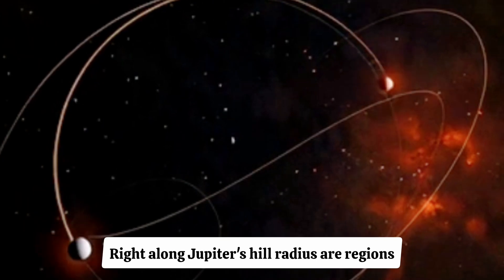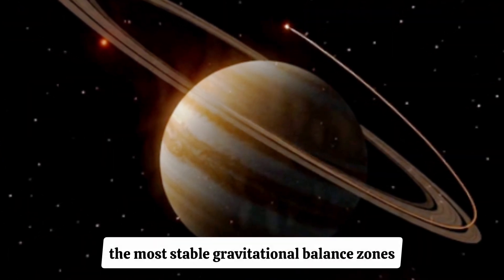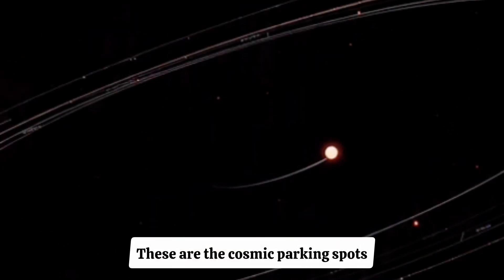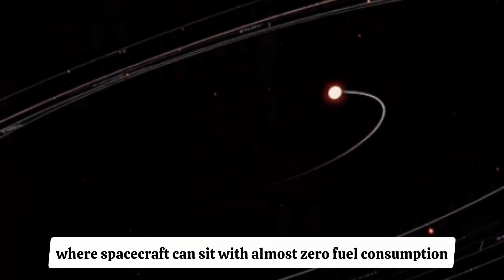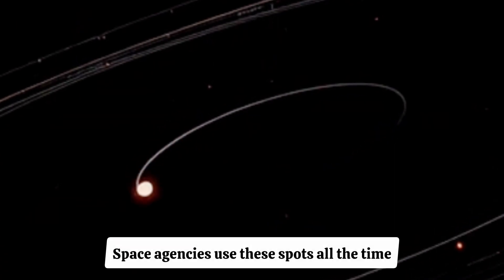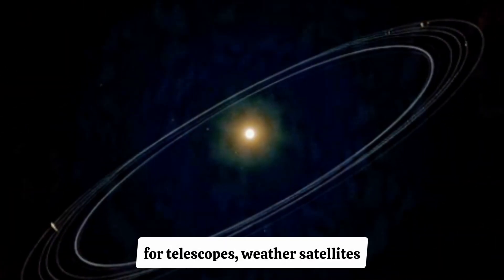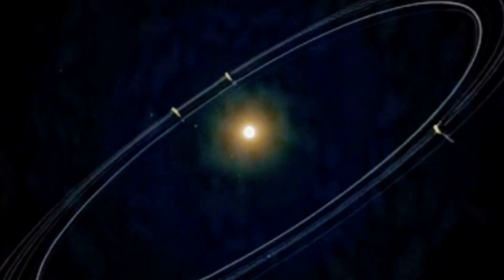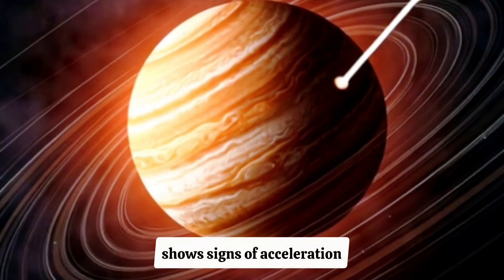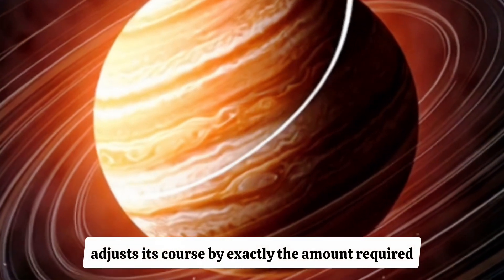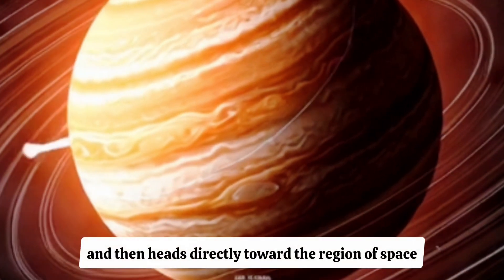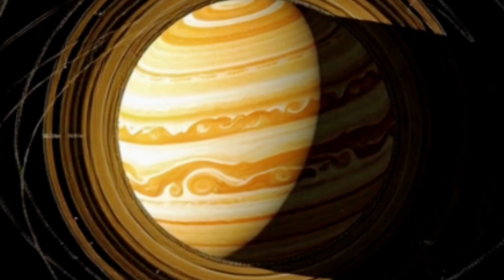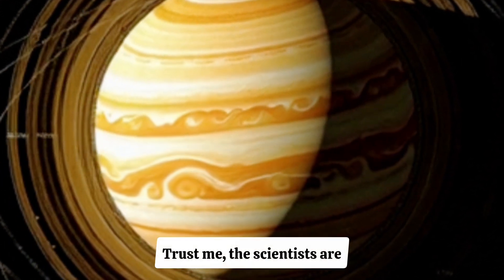Right along Jupiter's hill radius are regions called Lagrange points, the most stable gravitational balance zones in the entire Jupiter-Sun system. These are the cosmic parking spots, where spacecraft can sit with almost zero fuel consumption. Space agencies use these spots all the time for telescopes, weather satellites, and long-term observation missions. So imagine this. An interstellar object shows signs of acceleration, adjusts its course by exactly the amount required, and then heads directly toward the region of space where intelligent civilizations would place satellites. If you're not getting chills right now, trust me, the scientists are.